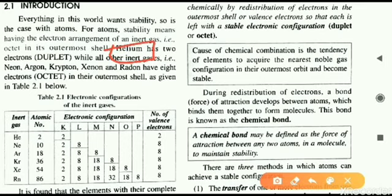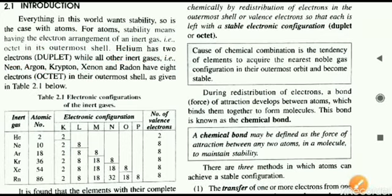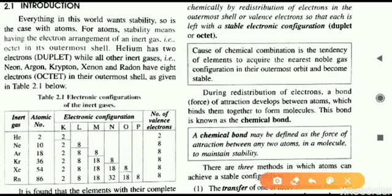There is one exception: helium, which has two electrons, called a duplet. Helium is the only element with a duplet. Hydrogen and helium are exceptions; all other elements seek an octet. They either lose electrons, gain electrons, or share electrons to form chemical bonds. The cause of chemical bonding is to achieve the noble gas configuration, or in other words, to become stable.